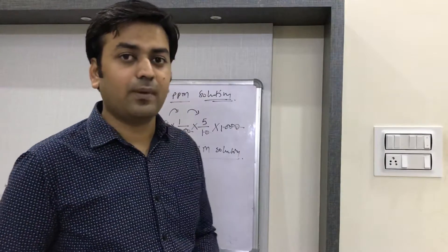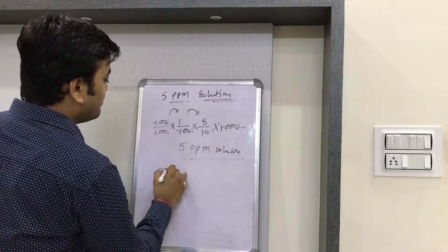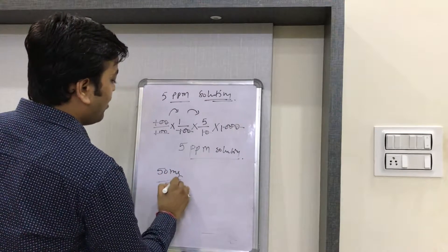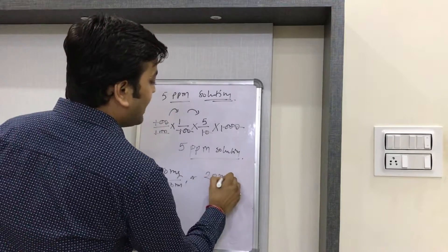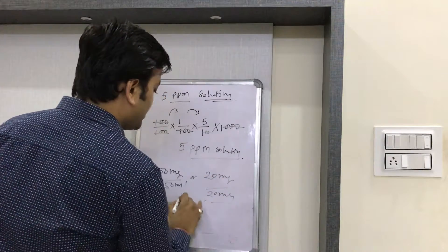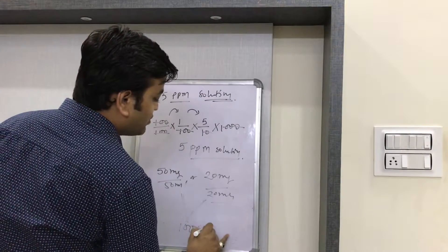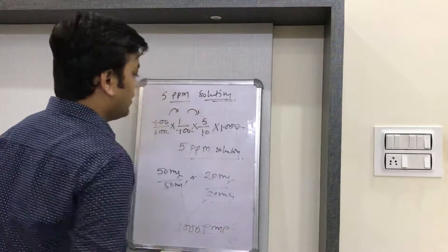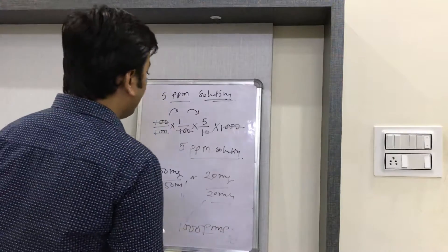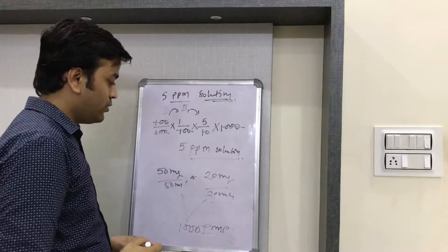To make a 1000 ppm stock solution, you can also take 50 mg in 50 ml of water, or 20 mg in 20 ml of water. In both conditions, we make a 1000 ppm solution. From this formula and these steps, we will make the 5 ppm solution.